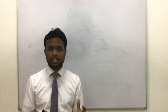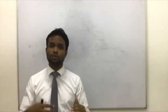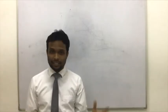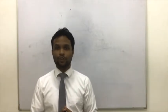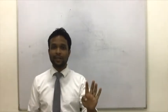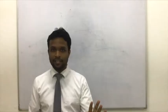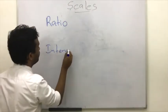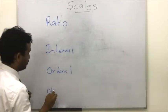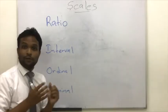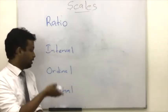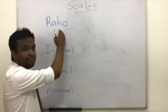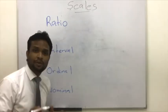Based on the scale we use to measure the values of a distribution, we have another categorization. We have four types of scales. I would like to go from bottom to top: Nominal, Ordinal, Interval, and Ratio.